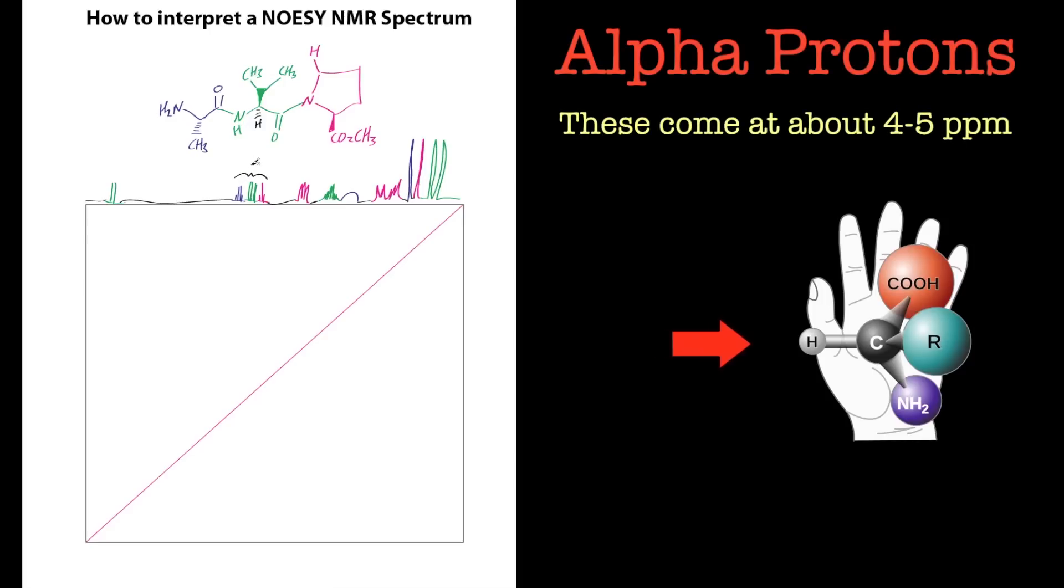These here, this is what you should be looking at for amino acids. These occur between 4 and 5 ppm and these are called the alpha protons, the alpha protons of each amino acid.